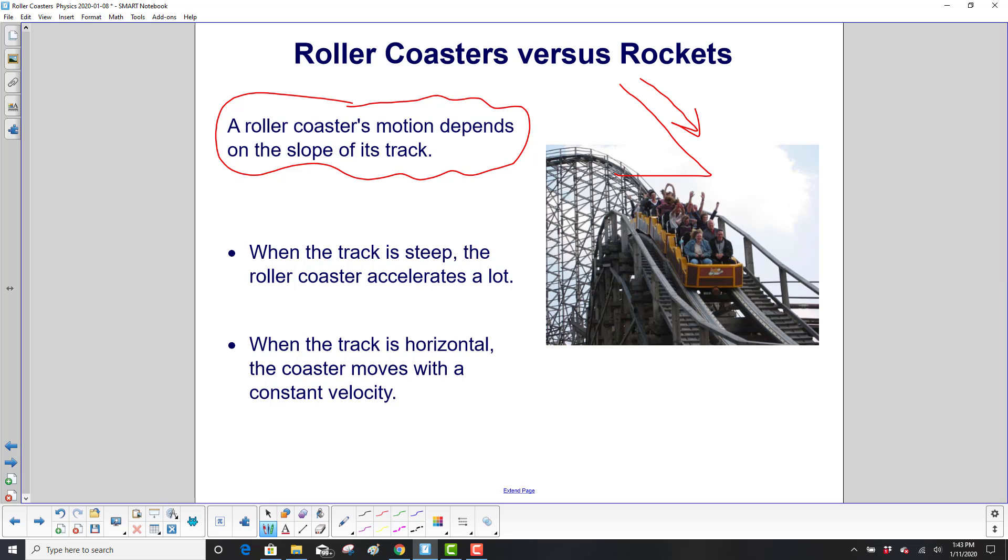You keep getting faster and faster. When the track is horizontal, the roller coaster does not accelerate. It moves with a constant velocity. You keep the same speed.